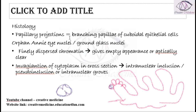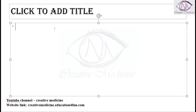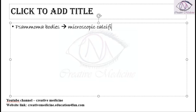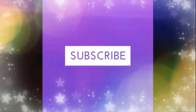One more important point is the presence of psammoma bodies, which are also seen in papillary carcinoma of the thyroid. Psammoma bodies are microscopic calcified deposits. They represent clumps of sloughed cells, and are seen on microscopy.